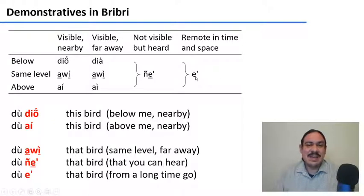And we have E, which is for something that's remote in time and space. So it's used in storytelling. For example, in a story about a bird that happened a long time ago, they would tell you DuE, that bird from a long time ago.